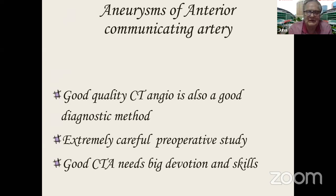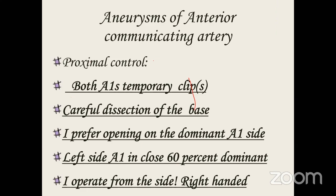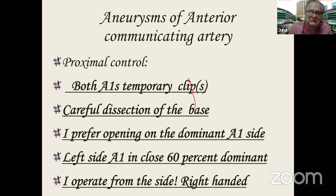We have diagnosed these aneurysms after initial CT showing subarachnoid hemorrhage. We do immediately CT angiography, and we have been happy with high-level CT angios to treat these aneurysms. When doing surgery there are some principles: you have to have proximal control — it helps a lot. I usually put temporary clips on both A1s, not on A2s, because there is some backflow from the A2s.